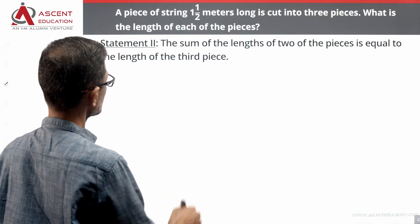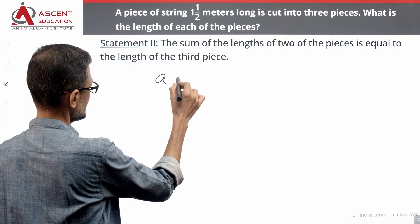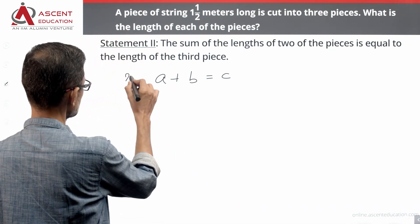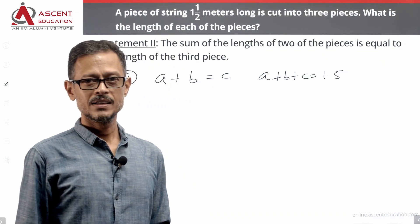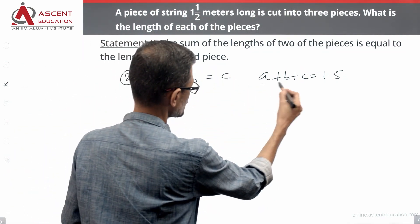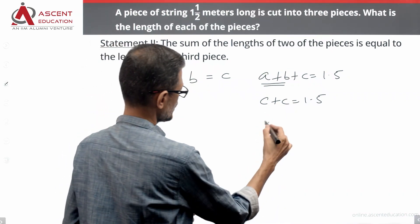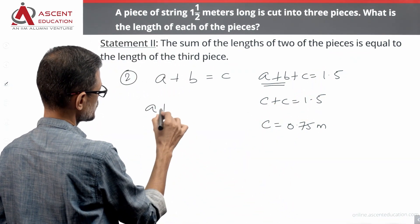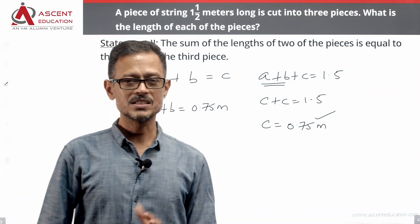Statement two says the sum of the lengths of two of the pieces is equal to the length of the third piece — so A plus B equals C. We know that A plus B plus C equals 1.5. Substituting, we get C plus C equals 1.5, so 2C equals 1.5, meaning C equals 0.75 meters. And A plus B is also equal to 0.75 meters.